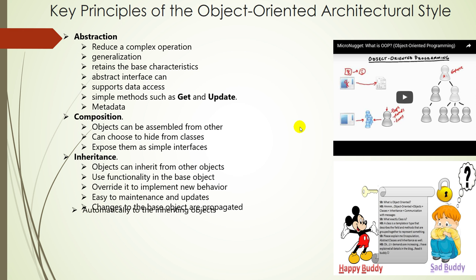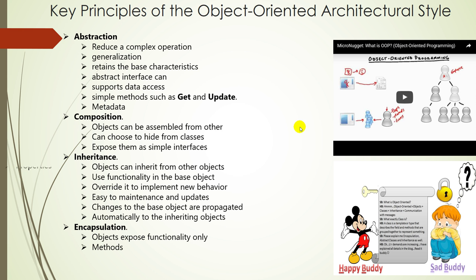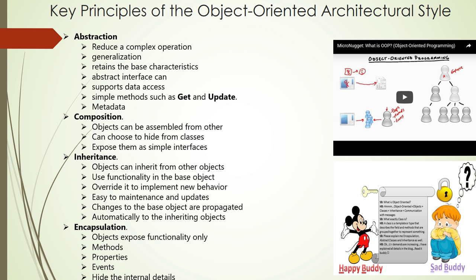Encapsulation: objects expose functionality only through methods, properties, and events, and hide the internal details — such as state and variables — from other objects. This makes it easier to update or replace objects, as long as their interfaces are compatible, without affecting other objects and code.